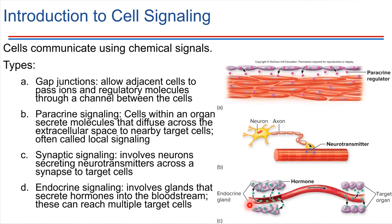Some cells have direct connections called gap junctions, which allow signals to be passed directly. Literally, molecules can be passed from one cell to an adjacent cell through this special channel called a gap junction. That would be a very direct form of cell communication.